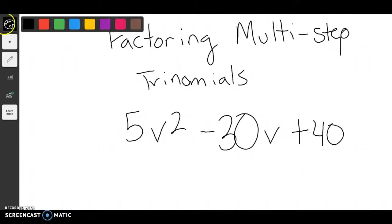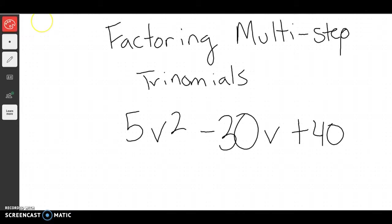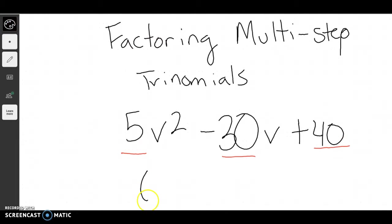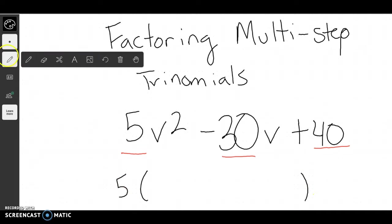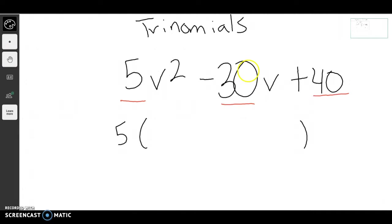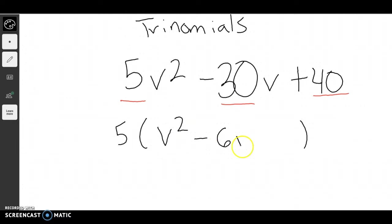When we look at this example, we can see that every number has been multiplied by 5. So my very first step is I'm going to take out a 5. Now that I've taken out a 5, I'm going to look and see: this would be v squared, this would be negative 6v, and this would be 8.